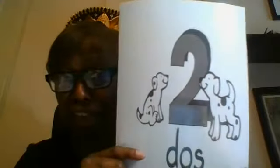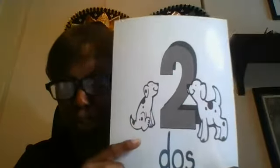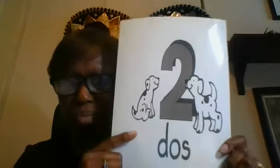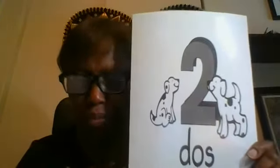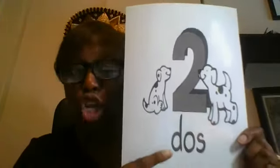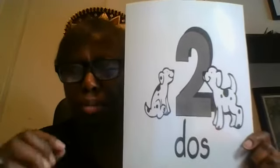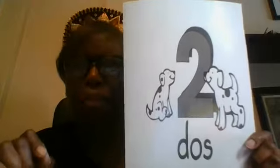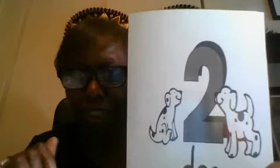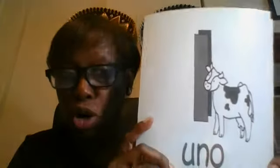One more time: uno vaca moo. Got it? Muy bien. Let's try number two. What animal do we have here? Two little dogs — puppies. We're going to say dogs. The number two is dos — clase, dos. And you're going to roll the R — perros. Dos perros, and they say ruff ruff. Say it two times.